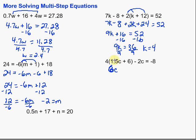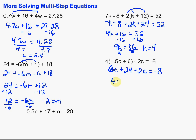Then 4 times 6 is 24, so plus 24 minus 2c equals negative 8. Then we combine like terms: we've got c terms here — 6c and minus 2c — which gives us 4c plus 24 equals negative 8.